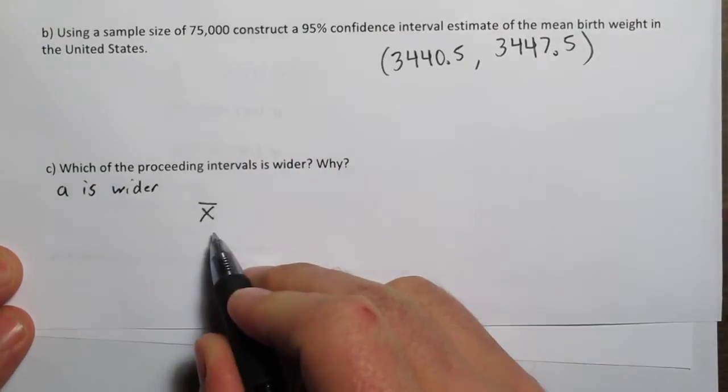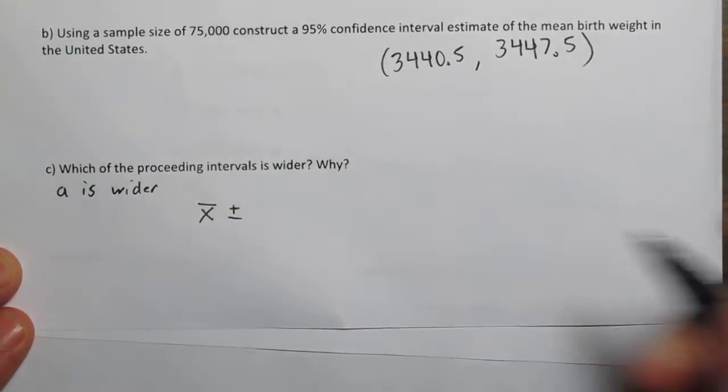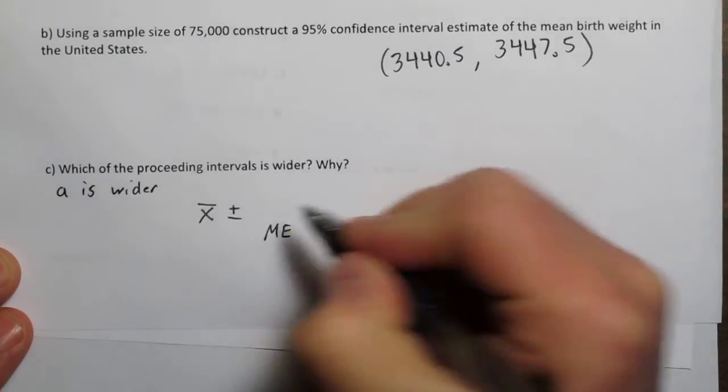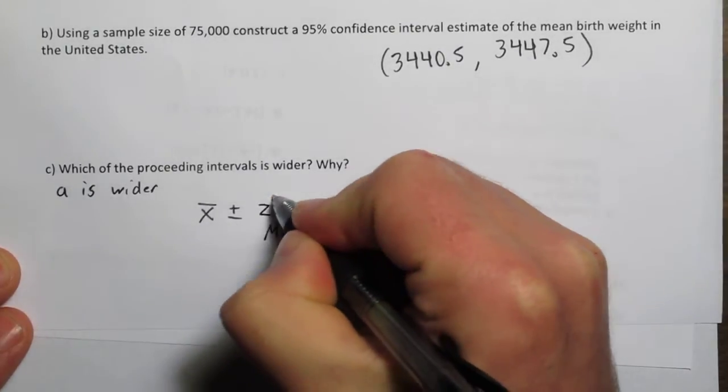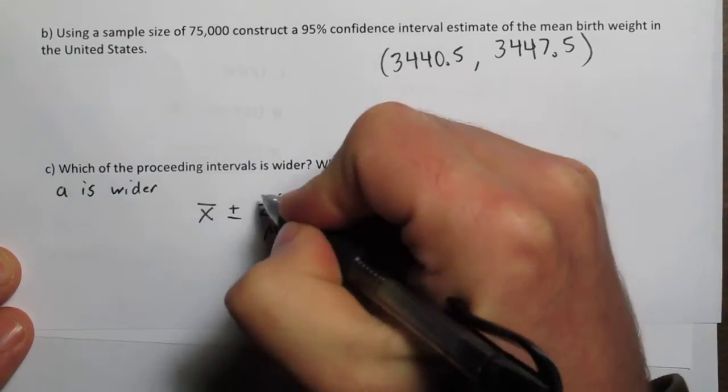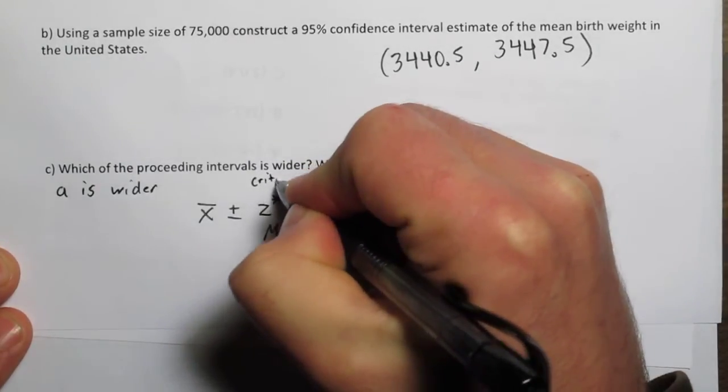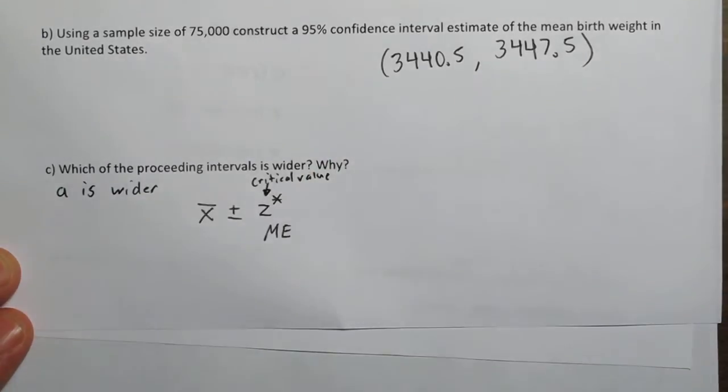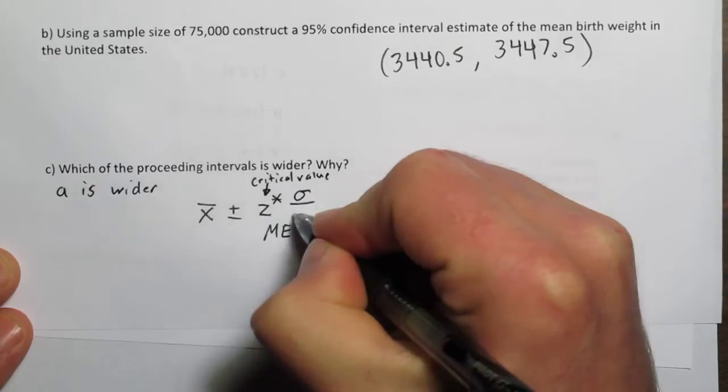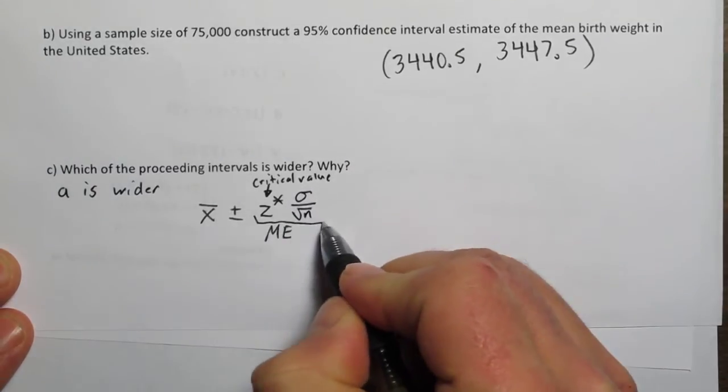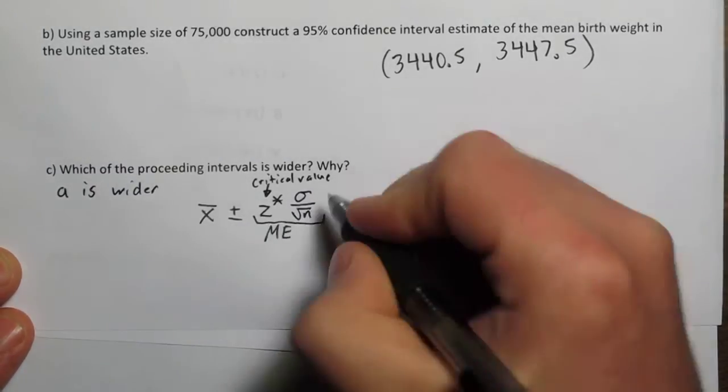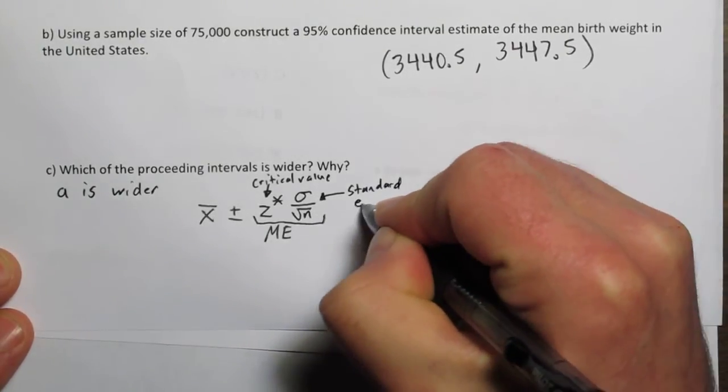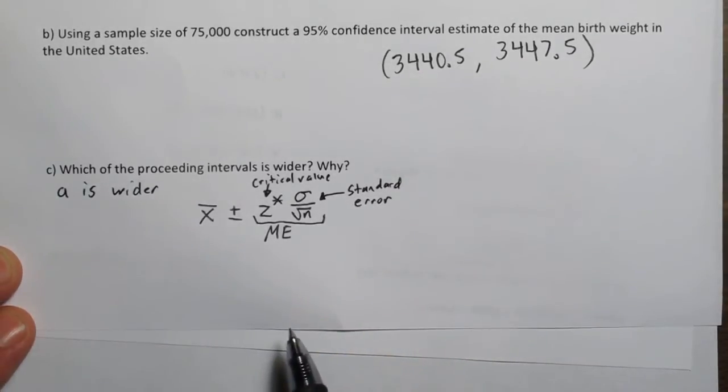you take the sample mean and then you add and subtract the margin of error. The margin of error is made up of two things: z star, this is the critical value, and the standard error, which in this case is sigma over the square root of n. So margin of error is the product of the critical value and the standard error.